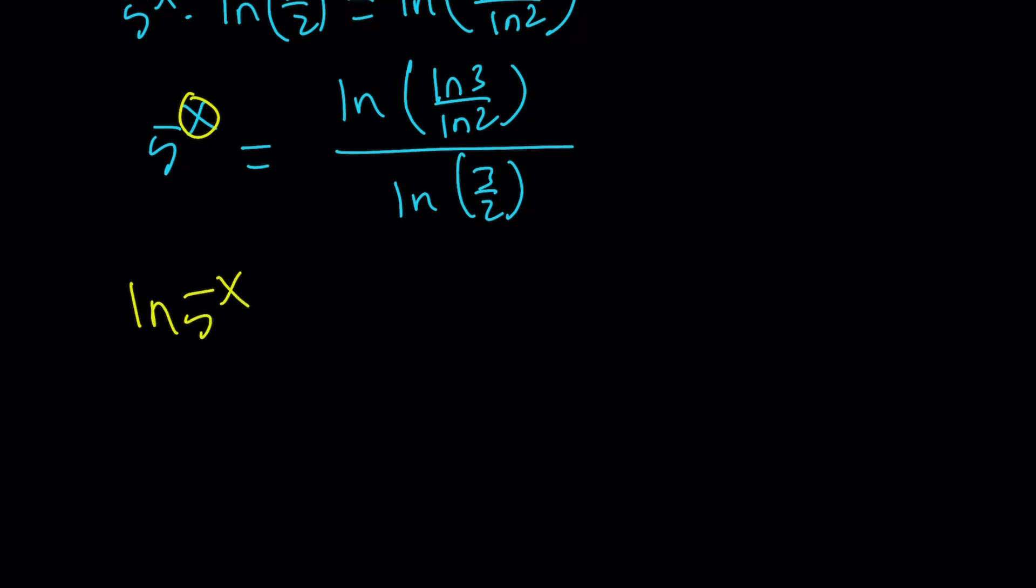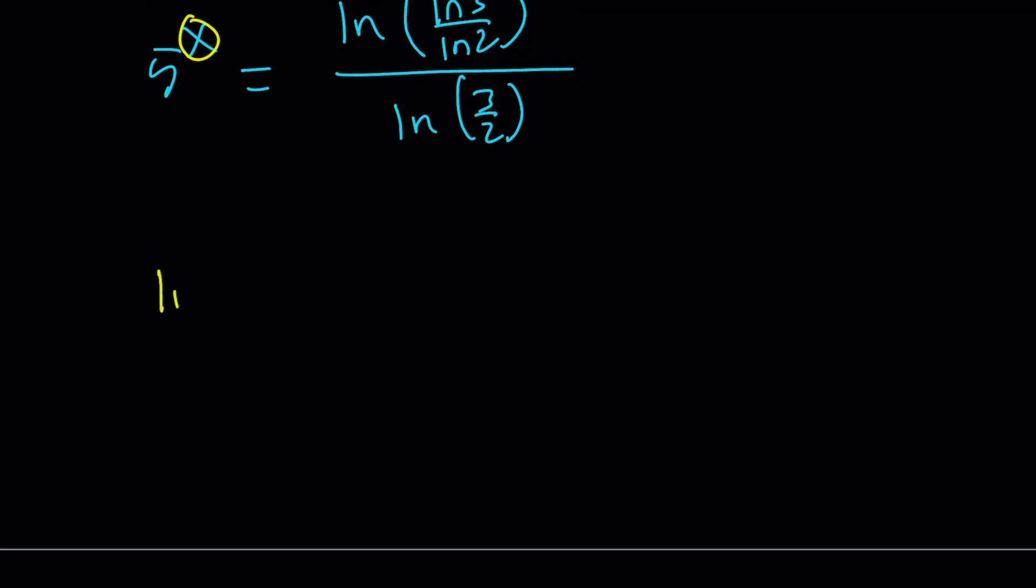ln 5 to the x equals... I'll probably need a little bit more room here, so let's move this thing to the front. ln 5 to the x equals ln ln 3 over ln 2 divided by ln 3 halves.